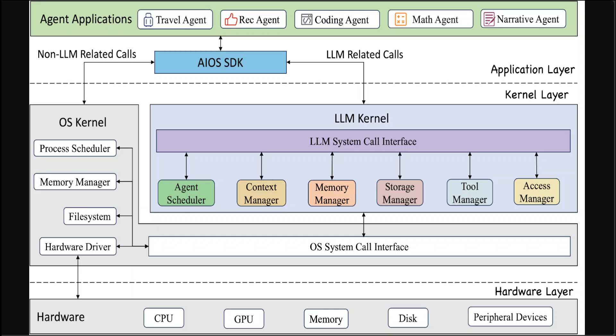Then we have the kernel layer. The kernel layer is divided into two primary components: the OS kernel and the LLM kernel, each serving the unique requirements of non-LLM and LLM-specific operations respectively. This distinction allows the LLM kernel to focus on LLM-specific tasks such as context management and agent scheduling, which are essential for handling LLM-related activities and are not typically within the purview of standard OS kernel functions. This work primarily concentrates on enhancing the LLM kernel without making significant alterations to the existing OS kernel structure.